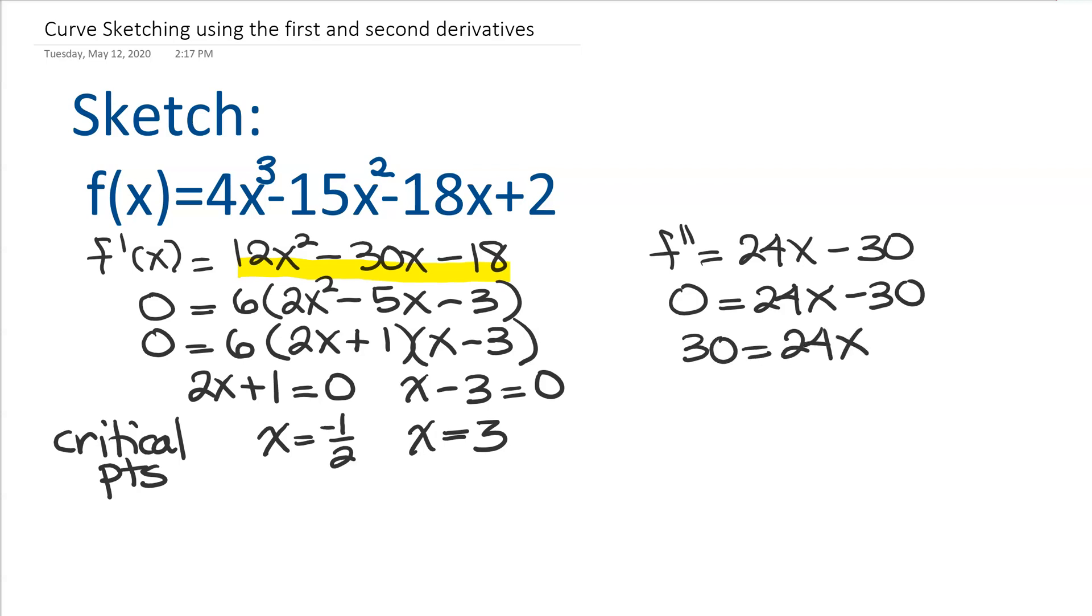So solving this for x, dividing both sides by 24, I end up, if I reduce it, to 5 fourths. So I like to call this my PIP, my possible inflection point. I still need to do the testing to find out.